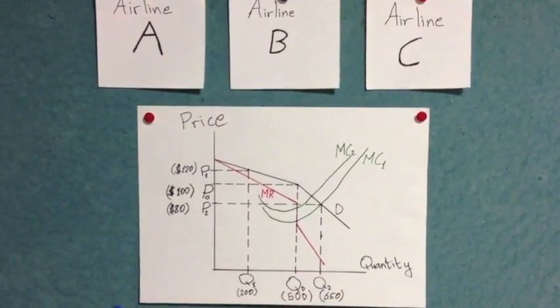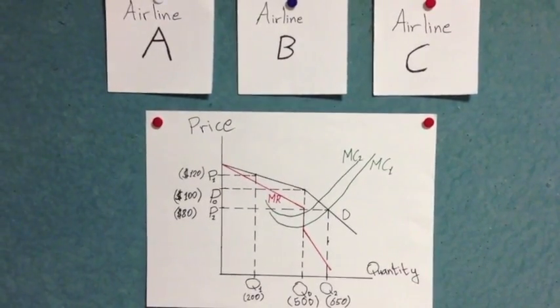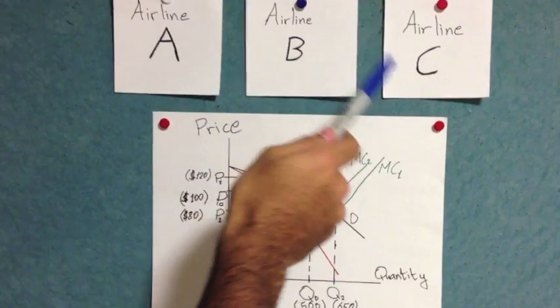Let me explain to you the theory of the kink demand curve model and show you what the diagram would look like. So, let's say we're on a small island with a small airport. There are only three airlines that offer regular flights from this island back to the mainland, which are Airline A, Airline B, and Airline C.